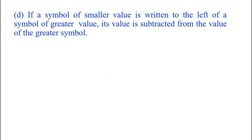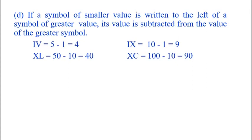If a symbol of smaller value is written to the left of a symbol of greater value, its value is subtracted from the value of the greater value. For example, IV, I is written to the left of V, so 5 minus 1 that is equal to 4. Then IX, 10 minus 1 is equal to 9. XL, 50 minus 10 is equal to 40. XC, 100 minus 10 is equal to 90.